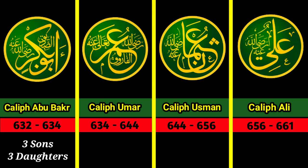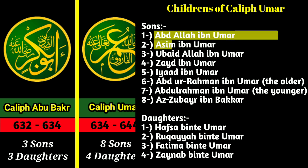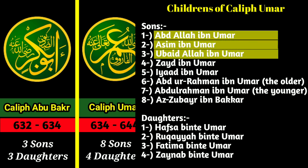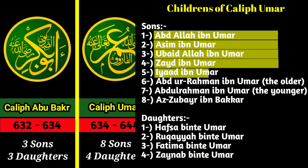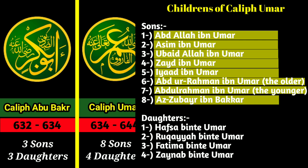Caliph Umar had 12 children — eight sons and four daughters. His sons' names were: Abd Allah ibn Umar, Asim ibn Umar, Ubaid Allah ibn Umar, Zaid ibn Umar, Iyad ibn Umar, Abd ur-Rahman ibn Umar also called Abd ur-Rahman the Elder, Abd ur-Rahman ibn Umar or Abd ur-Rahman the Younger, and Az-Zubayr ibn Bakr.